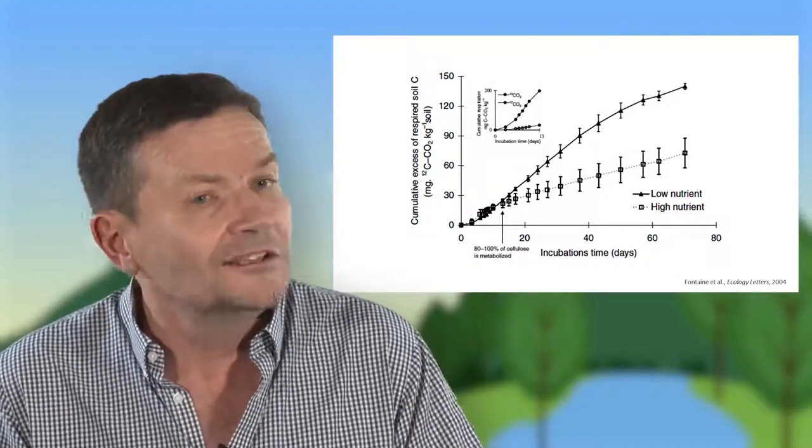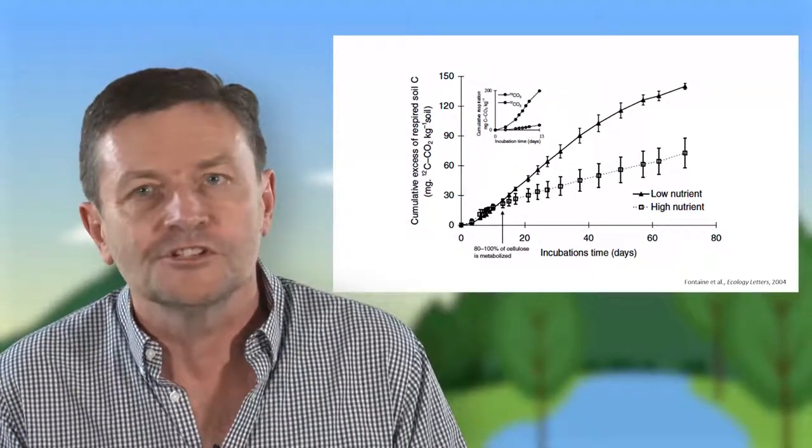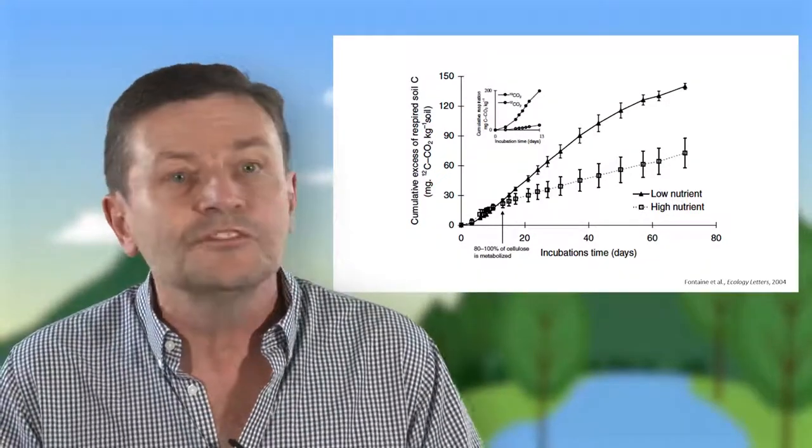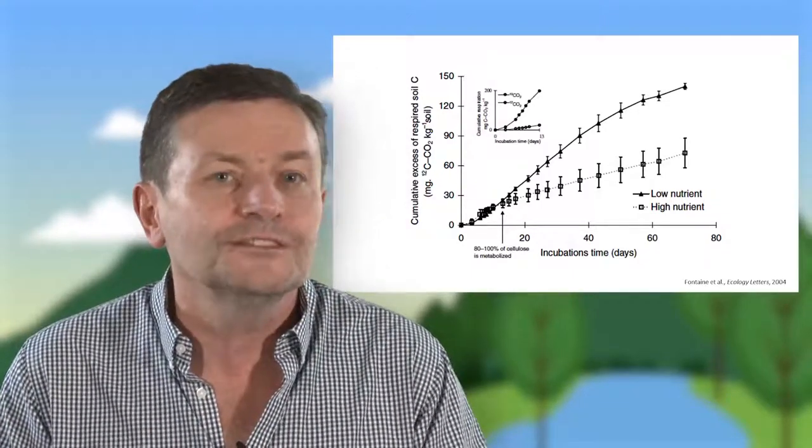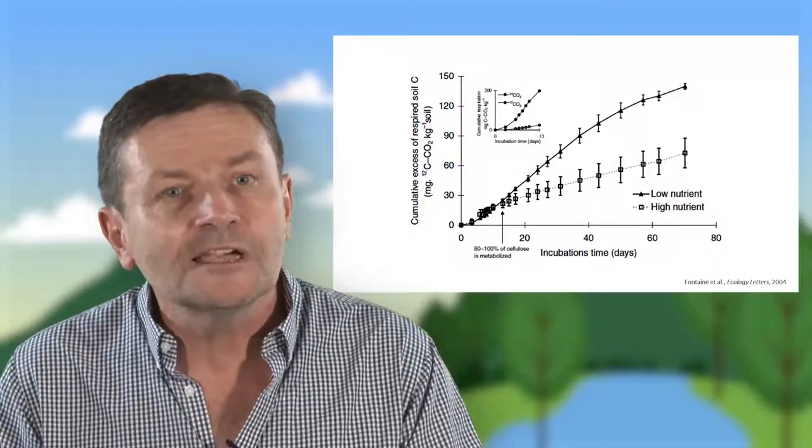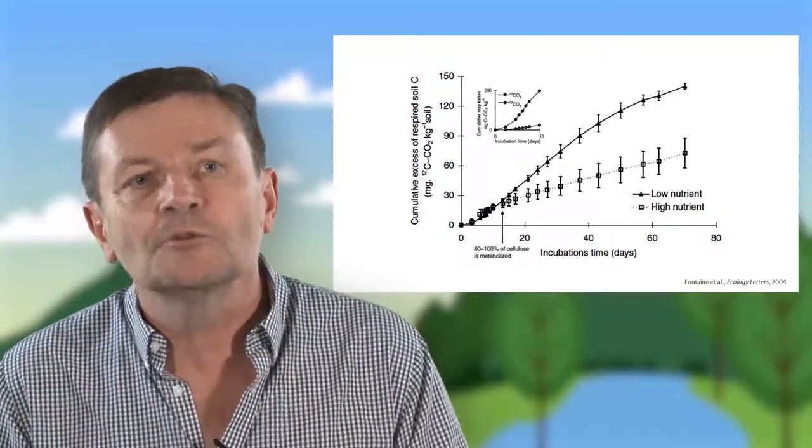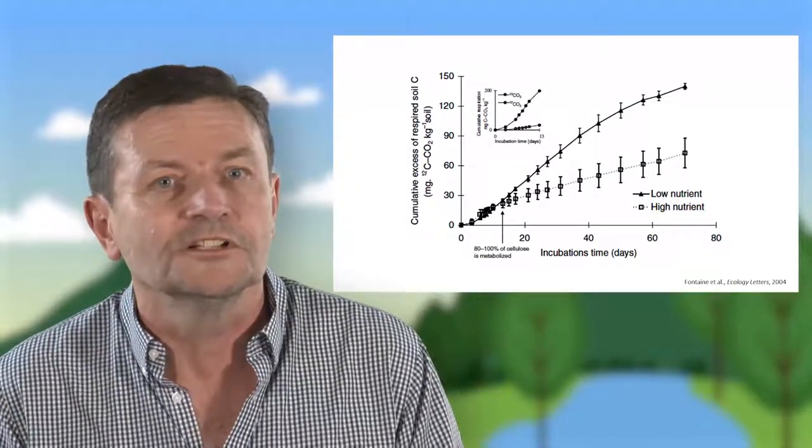La solution a été trouvée par les plantes il y a longtemps, et ça ouvre des perspectives nouvelles en ingénierie écologique. La solution des plantes, c'est tout simplement de consacrer en moyenne un tiers de la production nette de molécules organiques issues de la photosynthèse, un tiers qui va être sécrétée activement par les racines sous forme de petites molécules, donc à bon rendement énergétique lors de la dégradation.